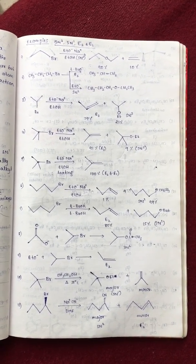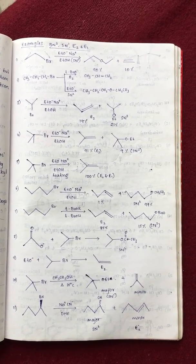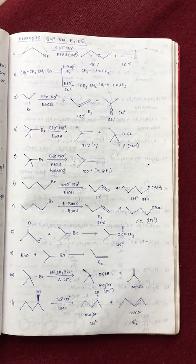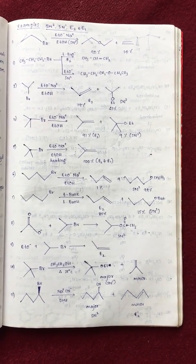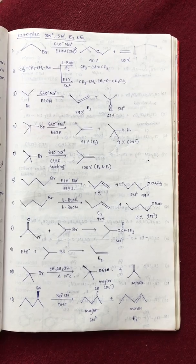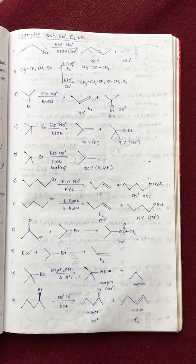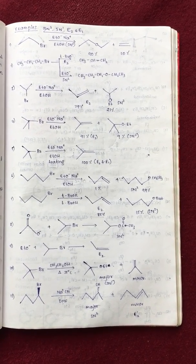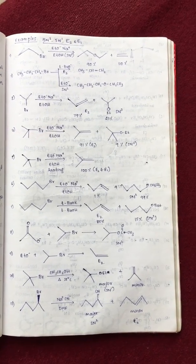Eleventh example. React with sodium cyanide in DMF. DMF solvent meaning this is a SN2 reaction, because polar aprotic solvent. Based on that, we can conclude this is SN2 product substitution, then the elimination. Thank you.